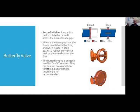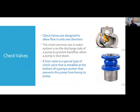Butterfly valves have a disc rotated on a shaft across the diameter of a pipe. In the open position the disc is parallel with the flow; when closed, it seals against a rubber or synthetic seat. Butterfly valves are primarily used for on-off service and can be used occasionally for throttling, but prolonged throttling is not recommended. Check valves allow flow in only one direction — most commonly used on the discharge side of a pump to prevent backflow when the pump shuts down. A foot valve is a special check valve installed at the bottom of a pump suction to prevent the pump from losing its prime.